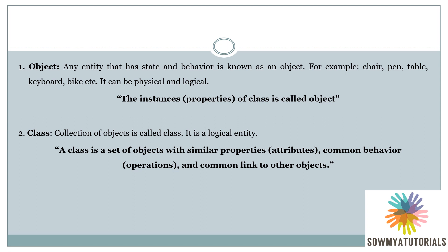First, what is an object? Object is a real world entity. Another definition: any entity that has a state and behavior is known as an object. One more definition: the instances of a class are also called objects.